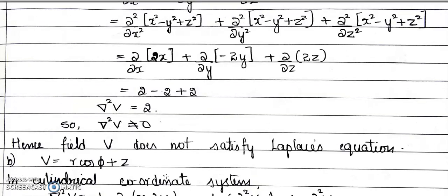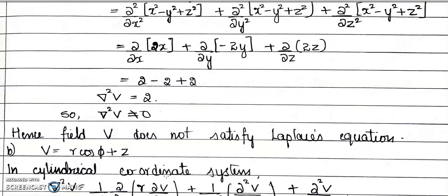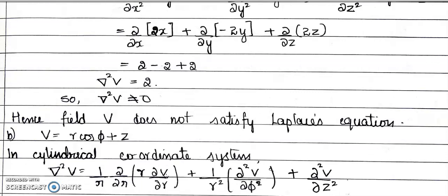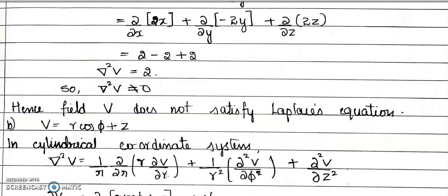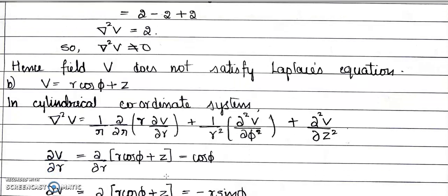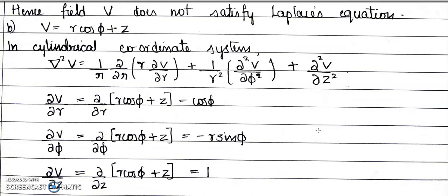For the second problem, the potential field is V = R cosφ + z in the cylindrical coordinate system. The Laplacian del²V in cylindrical coordinates is: (1/R)·∂/∂R(R·∂V/∂R) + (1/R²)·∂²V/∂φ² + ∂²V/∂z². We will first find ∂V/∂R, ∂V/∂φ, and ∂V/∂z, then differentiate again to get the required terms.